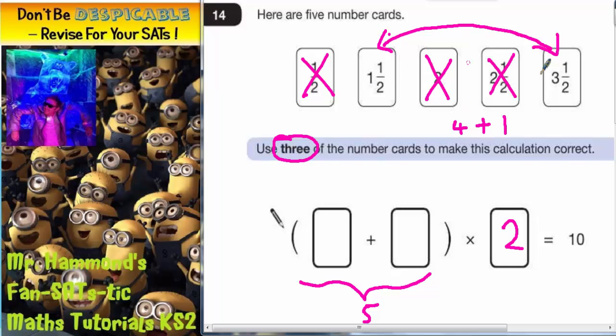It's going to be one and a half and three and a half. So now we write those in the box. Good idea just to check what we've got. So one and a half plus three and a half, that does make five. And when we times it by two that does make ten. So that's it.